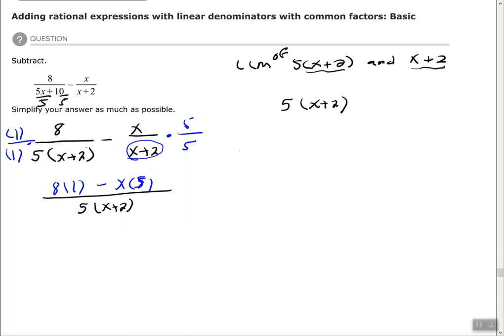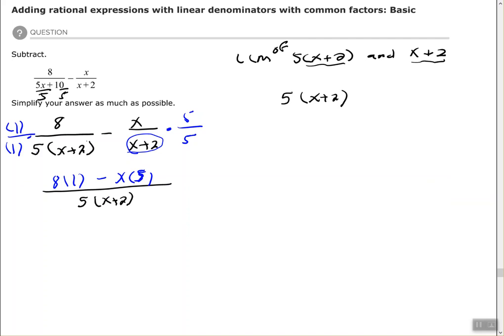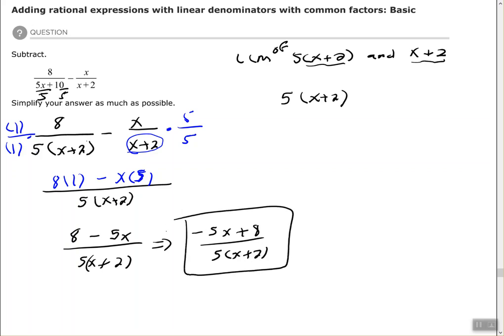Now we have 8 minus 5x all over 5 times x plus 2. You can leave it like that or flip it around: negative 5x plus 8 all over 5 times x plus 2. There's nothing I can factor from the 5x and the 8, so that's my final answer.